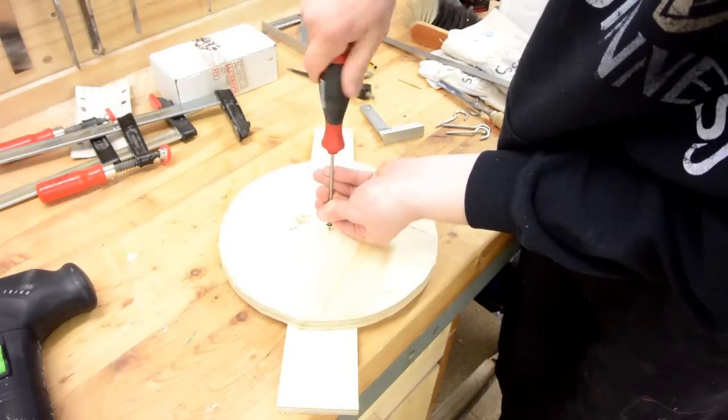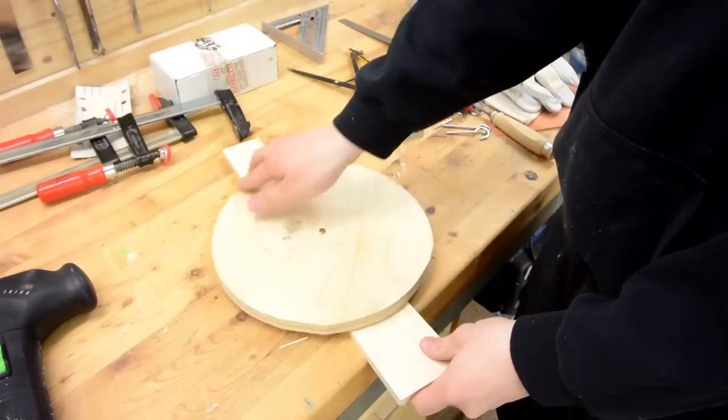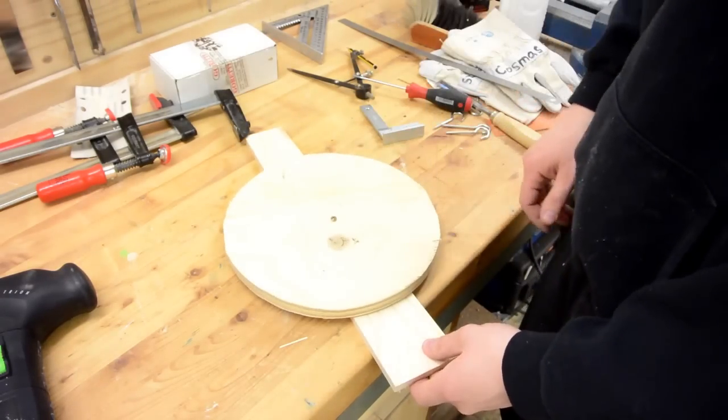Now I could screw the disk to a piece of plywood so that it is freely rotating and use my sander to turn it into a perfectly circular disk.